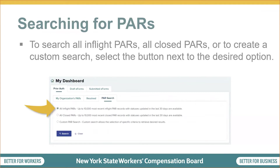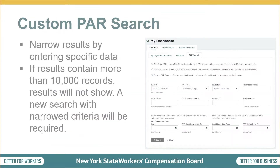To use the various PAR search options, all you have to do is select the button next to the option you want and then select Search. Custom PAR search allows the workload administrator to narrow search results by entering specific search criteria. Searches can be done by entering data in one or more fields for PAR ID, PAR Type, PAR Status, Patient Last Name, WCB Case Number, Claim Admin Claim Number, Insurer ID, or Provider Name. Searches can also be done for PARs submitted during a specific date range or for PARs with a status date within a specific date range.